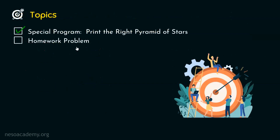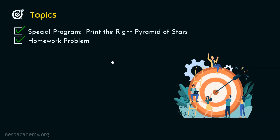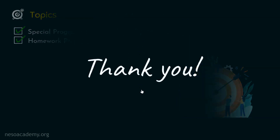We have understood how to write the program to print the right pyramid of stars and verified it in Visual Studio Code. Now for the homework problem: write a program to print the left pyramid of stars as shown. I encourage you to write the program on your own and post it in the comment section below. That's it for this lecture — thank you for watching, and I will see you in the next one.